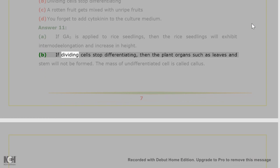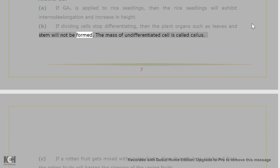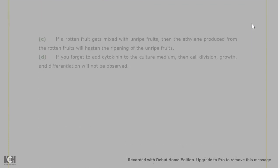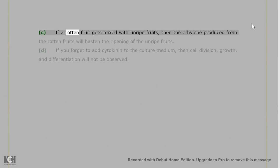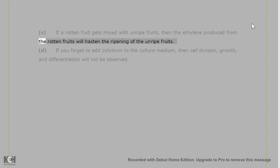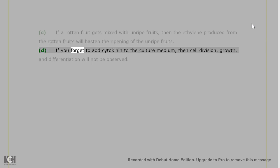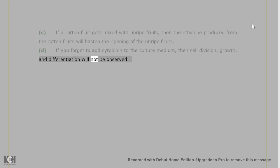B. If dividing cells stop differentiating, then plant organs such as leaves and stem will not be formed. The mass of undifferentiated cells is called callus. C. If a rotten fruit gets mixed with unripe fruits, then the ethylene produced from the rotten fruits will hasten the ripening of the unripe fruits. D. If you forget to add cytokinin to the culture medium, then cell division, growth, and differentiation will not be observed.